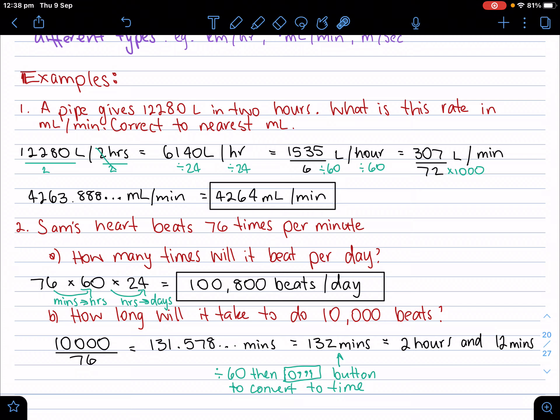Let's go on to example two. Sam's heart beats 76 times per minute. How many times will it beat per day? If it's 76 per minute, multiply by 60 for hours, then multiply by 24 because it's 24 hours in a day, and I get 100,800 beats per day.